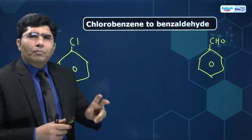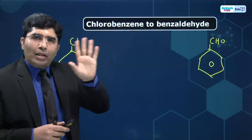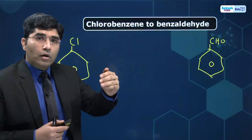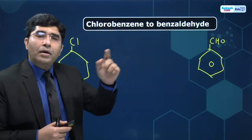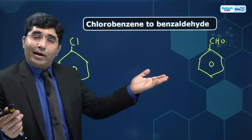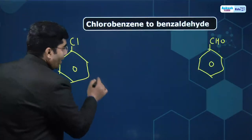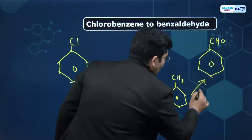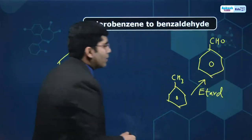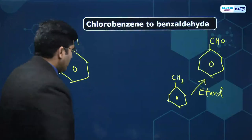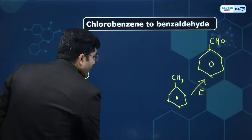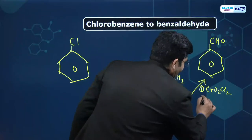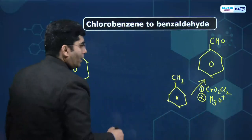So I can prepare benzaldehyde by two different name reactions. If I talk about name reactions: from benzene to benzaldehyde, this is the Gattermann-Koch reaction. And from toluene to benzaldehyde by the Etard reaction. So I can use either of them. First, let's go via toluene — Etard reaction uses chromyl chloride (CrO2Cl2) followed by acidic hydrolysis.